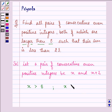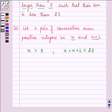And their sum, that is, the sum of x and x plus 2 has to be less than 23. Now, we will simplify the second inequality. We have 2x plus 2 is less than 23.